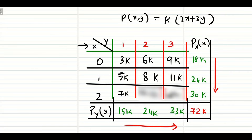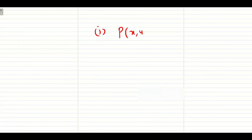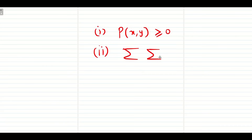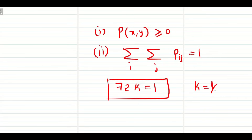Now let us solve the problem step by step. We know the property: all probability values should be greater than or equal to 0, and the double summation of P_ij equals 1. Using this, the grand total 72K = 1, so K = 1/72. Never substitute this value back into the table during working. Whatever we want to find, keep it as K and substitute the K value only at the end of the problem.